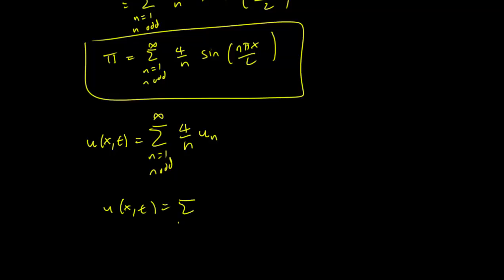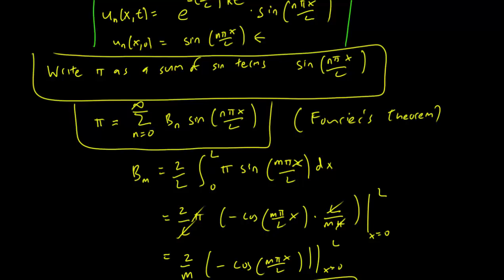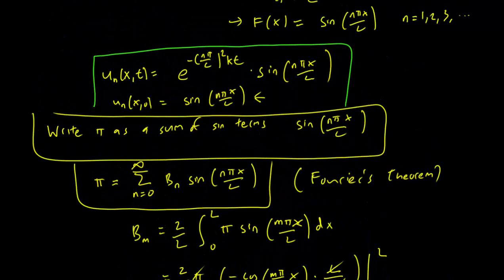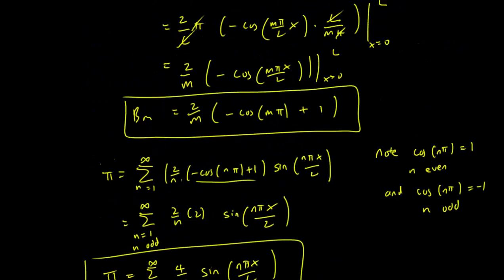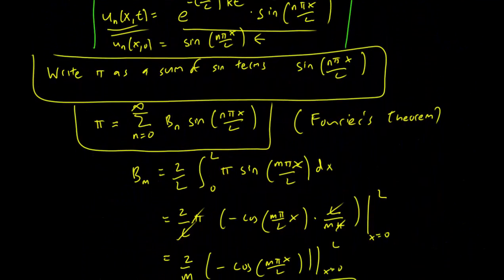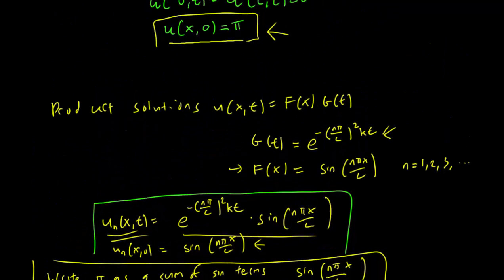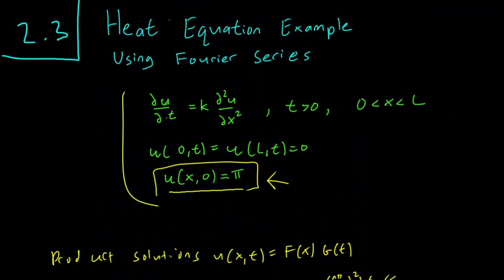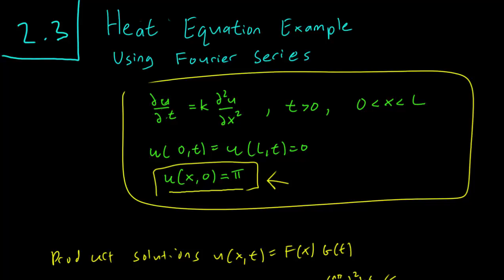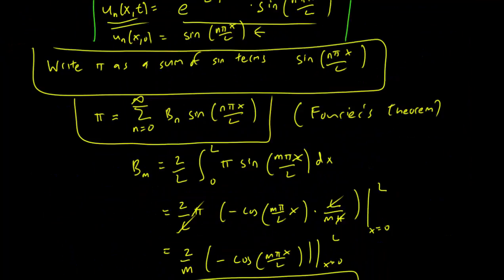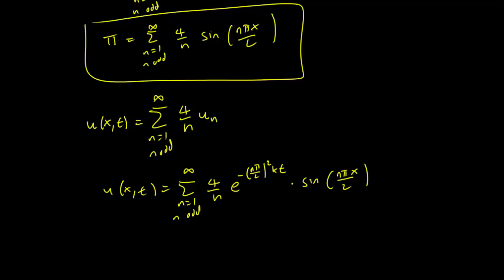Let's just write out the u_n in full. So n over 1 and odd infinity, 4 over n times u_n. And u_n is, of course, just going to be e^(-n pi over L squared kt) times sin(n pi x over L). And if we look at that, that is exactly the solution of our original problem that satisfies that particular initial condition. And I hope you can see the power of the Fourier method in figuring out the proper initial condition there.